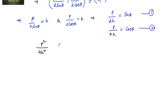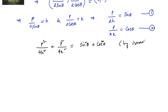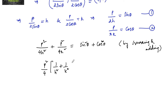Squaring and adding: p²/(4h²) + p²/(4k²) = sin²θ + cos²θ = 1. Taking out the common factor p²/4, we get 1/h² + 1/k² = 4/p².